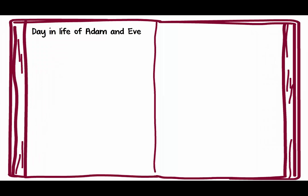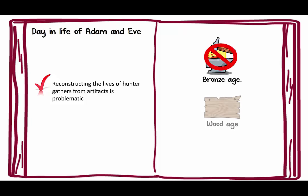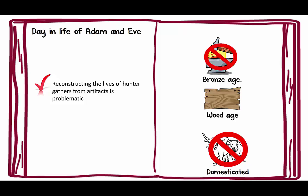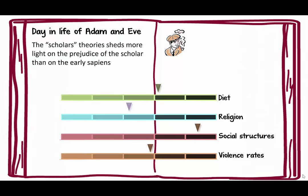He then wants to go back and ask: what was it like in the early days? Reconstructing the lives of hunter-gatherers from artifacts is very problematic. Although it's been called the bronze age, it was really the wood age, and we don't have artifacts from that timeframe. They had not domesticated animals, so they weren't able to travel and bring a lot of stuff with them. They packed light, and because they packed light, it's very difficult for us to figure out what they did and how they did it. There's a lot of speculation involved. He says that scholars' theories shed more light on the prejudice of the scholar than on the early sapiens themselves.